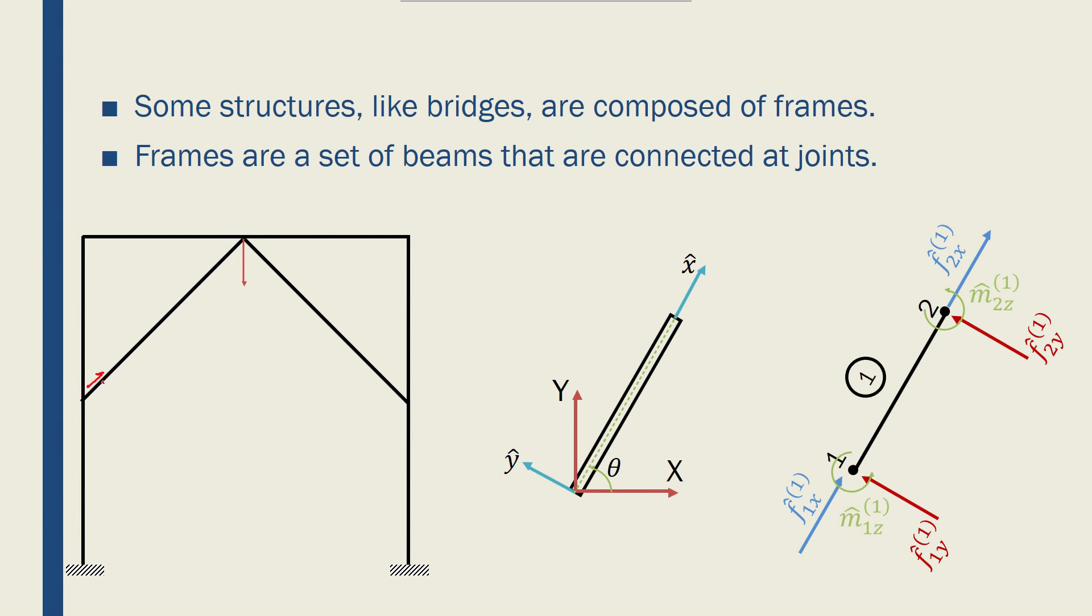For example, this bar could have its local coordinate system something like this, x hat and y hat, and this bar or this beam would have its own local coordinate system in that direction of x hat and y hat.